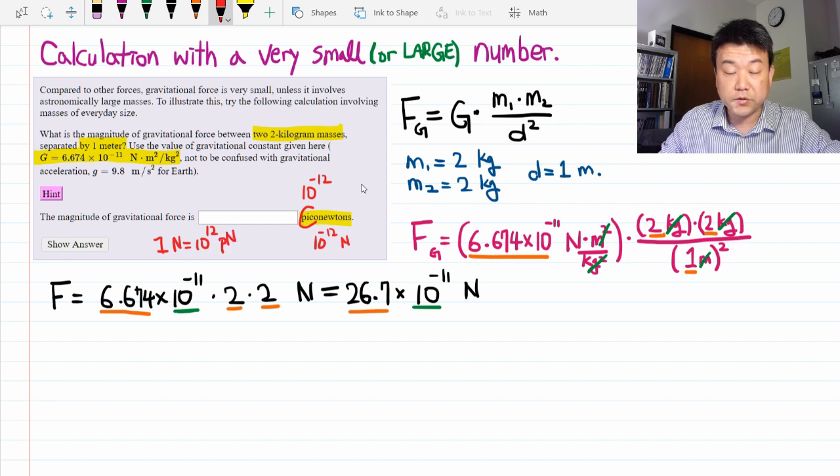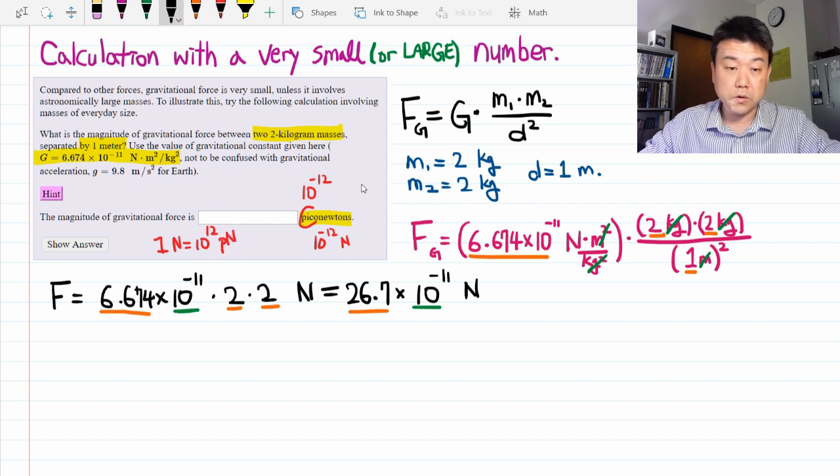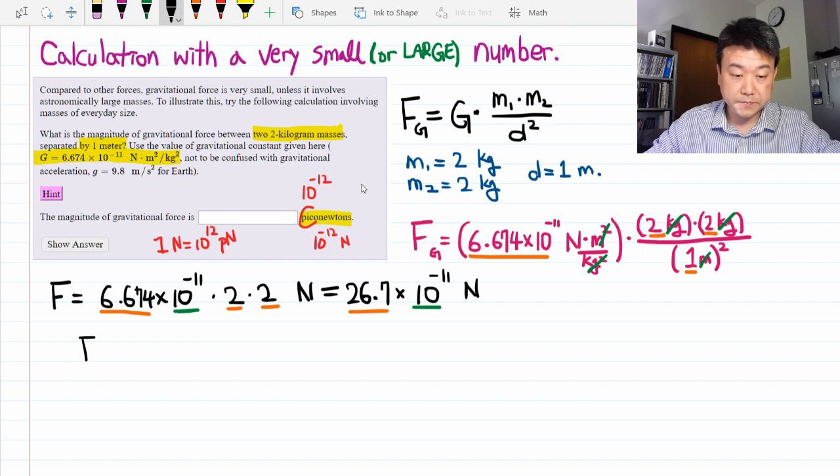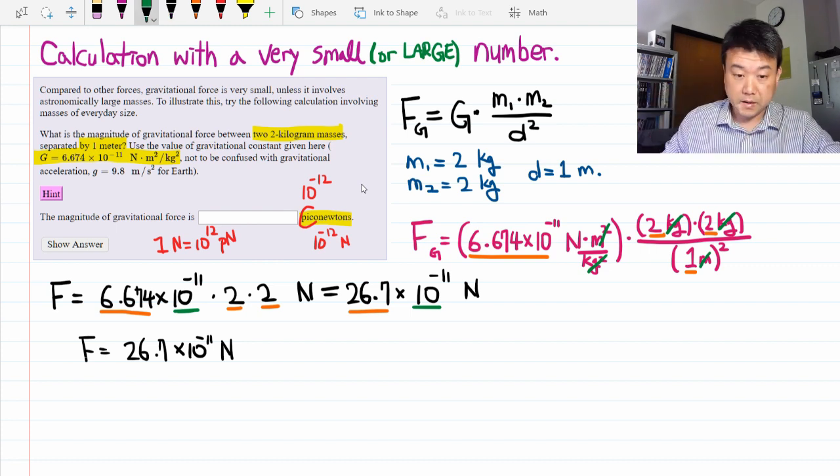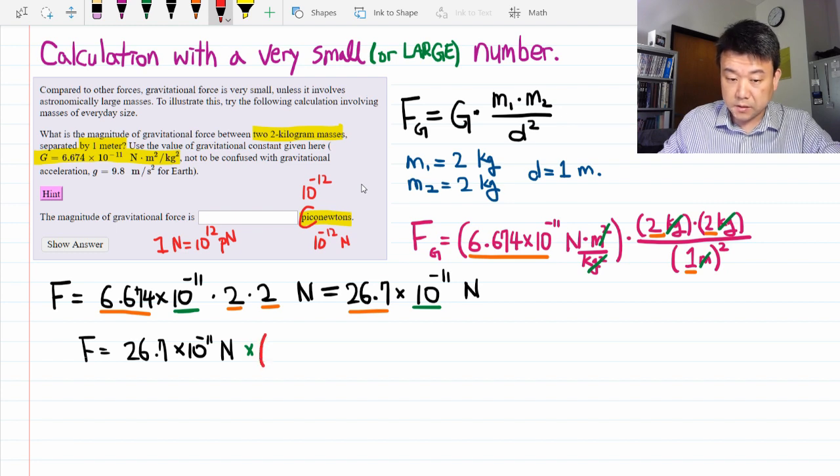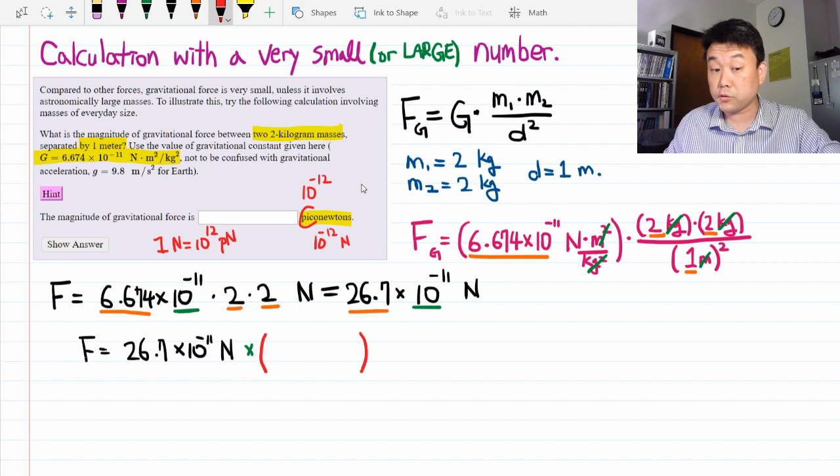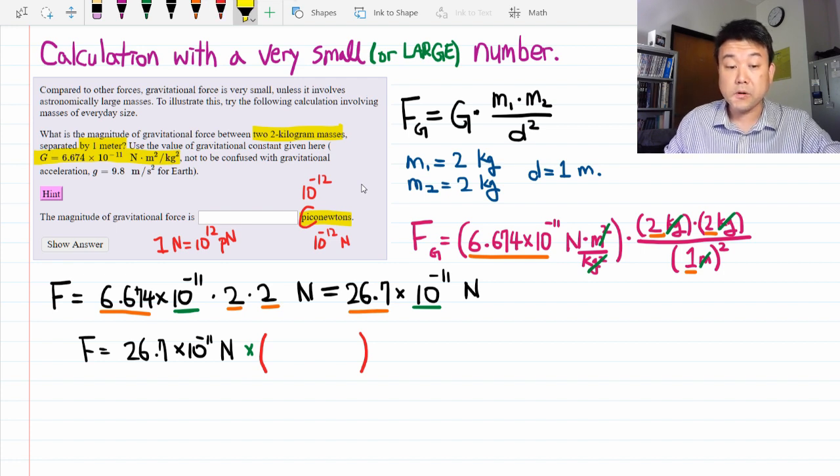Or another way of putting it would be 1 newton is equal to 10 to the 12 piconewtons. That's how many piconewtons you need to make up a newton. So given this force in newtons, to express the piconewtons, you multiply it by 1. And this 1 is very specifically constructed. It's a ratio of two quantities that are equal to each other.